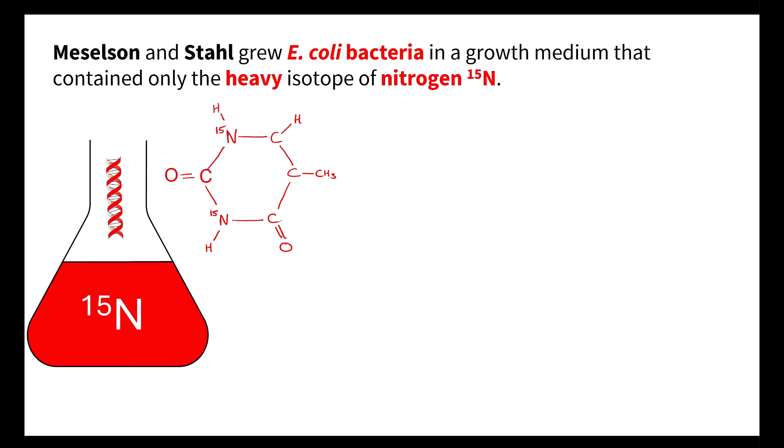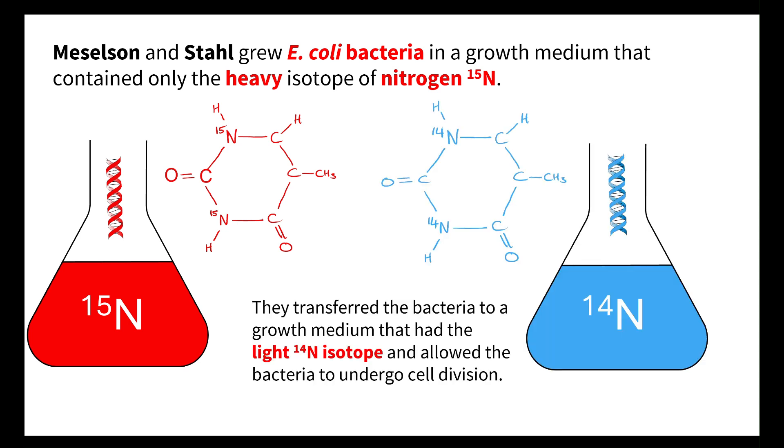This comes down to the work done by Meselson and Stahl, where they grew E. coli bacteria in a growth medium that contained only a heavy isotope. Therefore, the nitrogenous bases contained nitrogen, which was the isotope of N15. Once they'd grown the E. coli bacteria in this growth medium, they then transferred that bacteria to a growth medium that had only a light isotope, N14.